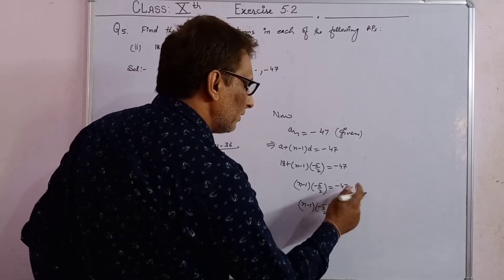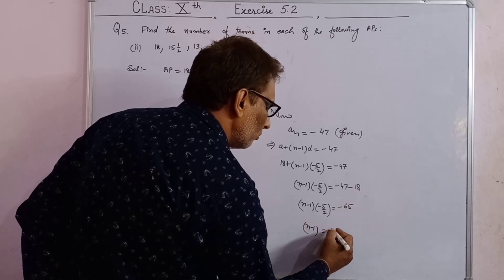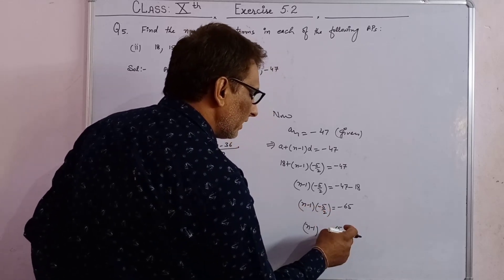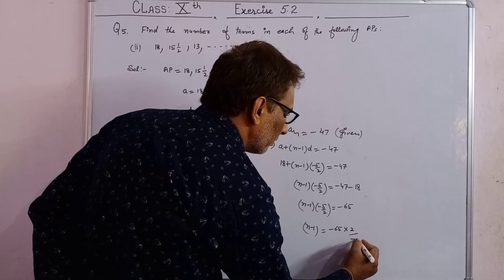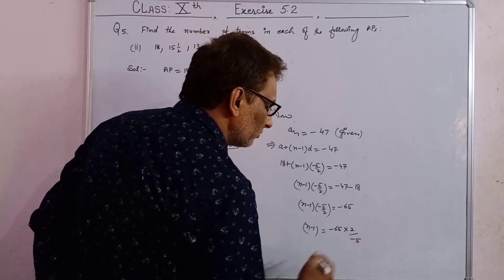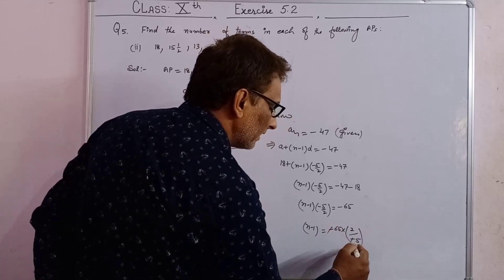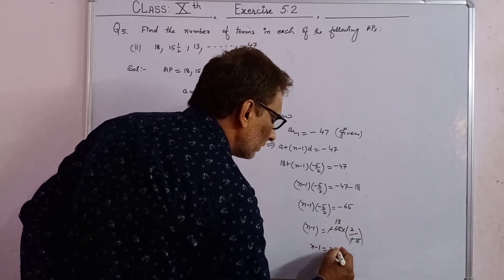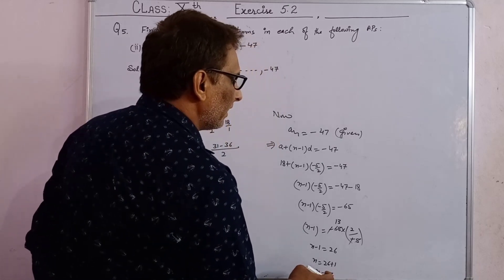Since both sides are negative, (n minus 1) into (minus 5 upon 2) equals minus 65. Dividing both sides: n minus 1 equals minus 65 multiplied by 2 upon minus 5, which gives n minus 1 equals 26. Therefore n equals 27.